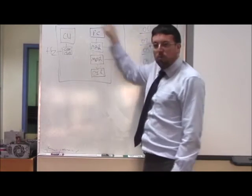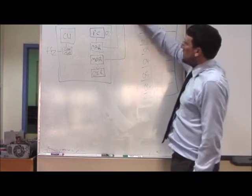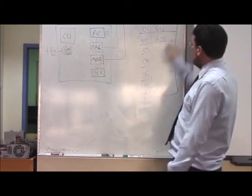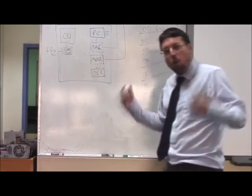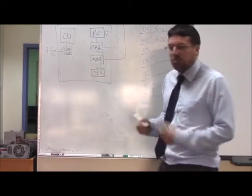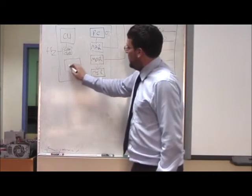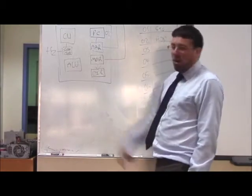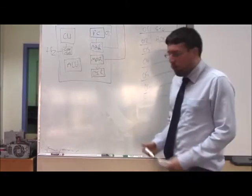We can now move on to the decode part of the cycle — we don't worry too much about that — but we're more interested in the execute part. Now we execute that instruction. That instruction could be an add instruction, a subtract instruction, an AND instruction, or an OR instruction. So there needs to be something inside the CPU that can do all of that — those adds, subtracts, ANDs, and ORs.